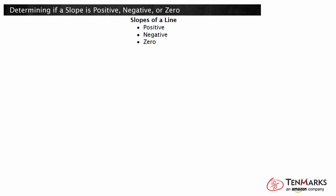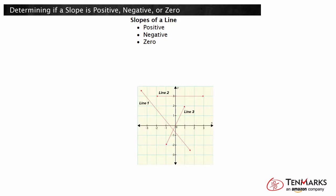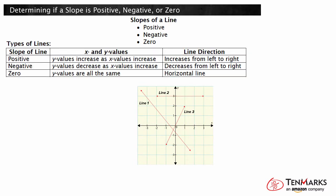In math, a line can have a positive slope, a negative slope, or a slope of zero. The coordinate plane shows three lines with different slopes. There are specific characteristics of each type of line.